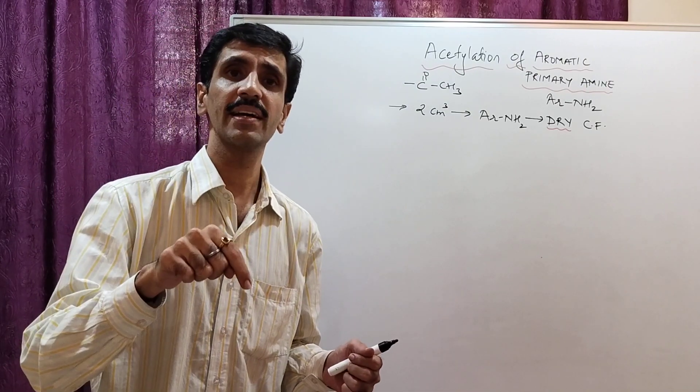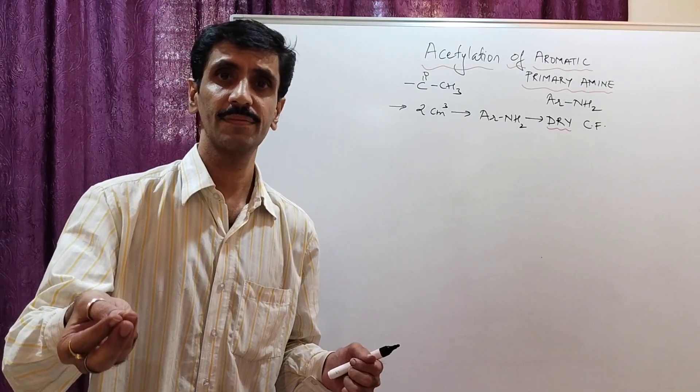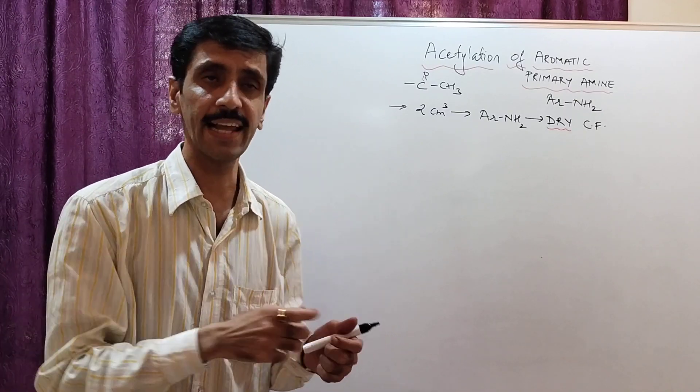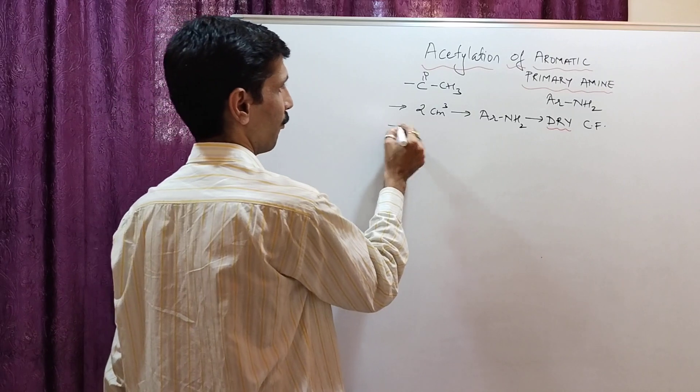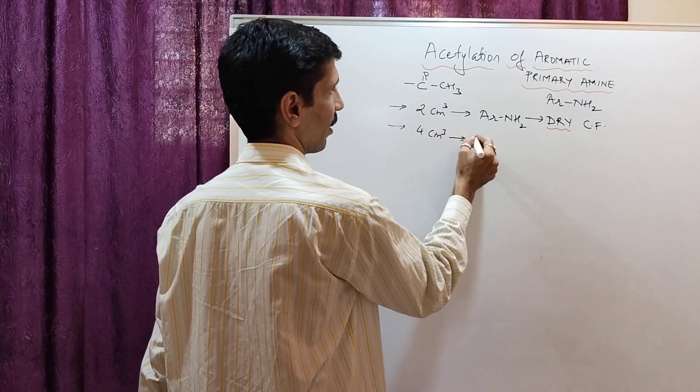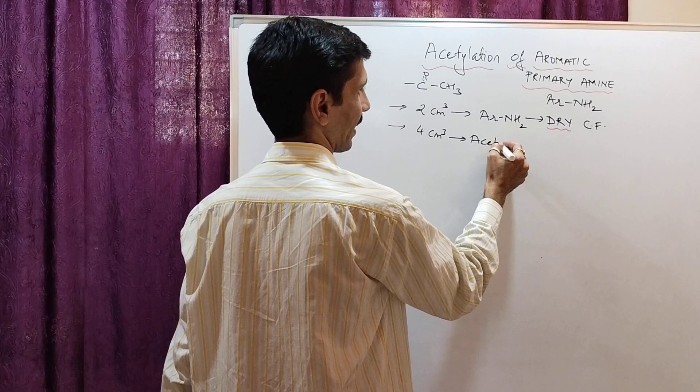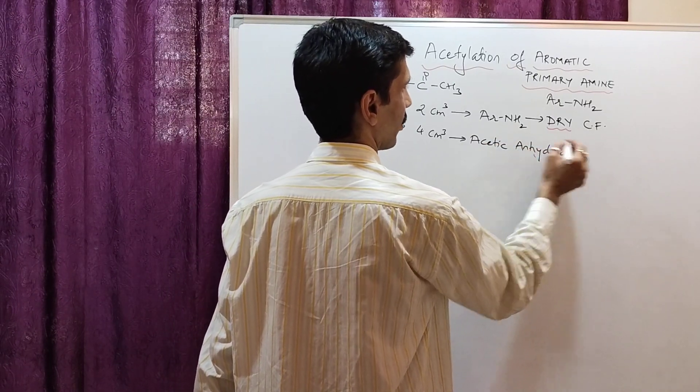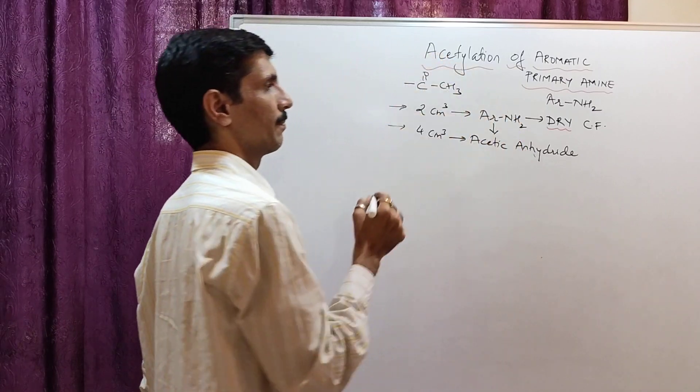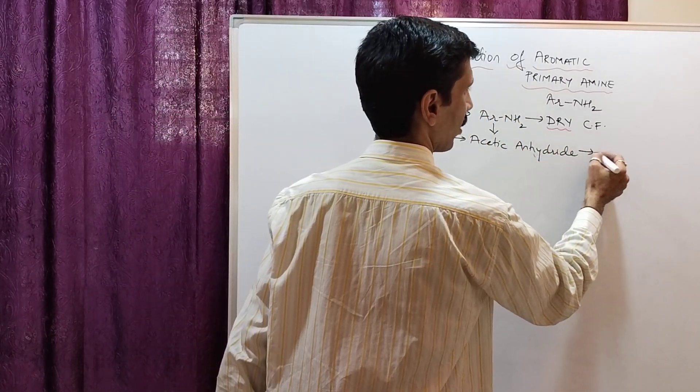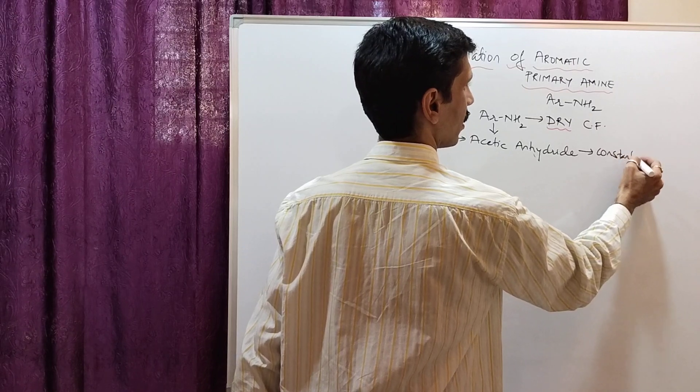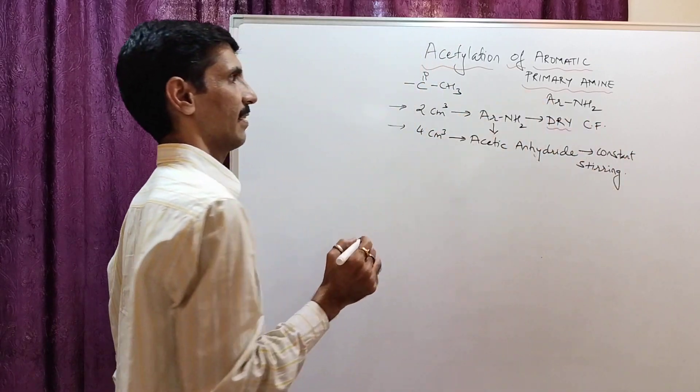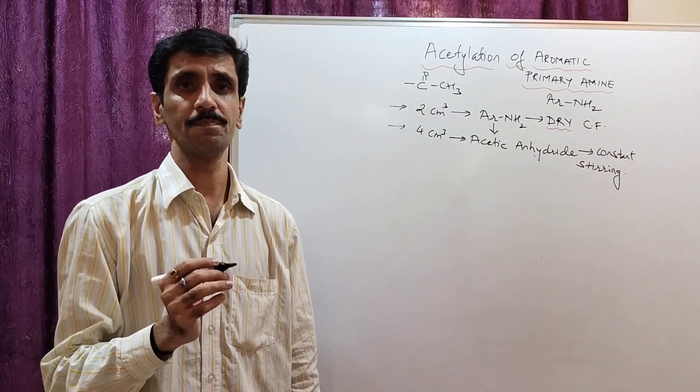Next thing is, we are going to add into it acetylating agent. It's a substance which is going to furnish, which is going to give an acetyl group. So, 4 cm³ of acetyl anhydride needs to be added into this, very slowly, with constant stirring. This is step number two.